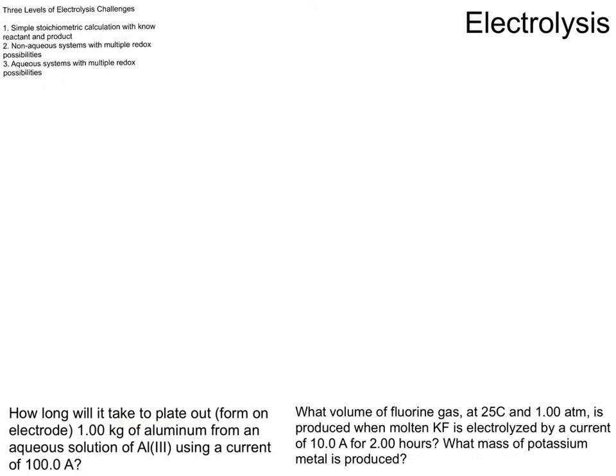So we want to know how long it's going to take to plate out or produce on the electrode. When we say plate out, what we mean is that some elemental metal material is being formed on the surface of the cathode electrode. That's what plating out means, it sticks to the surface of the electrode. So how long is it going to take to produce on the electrode, plate out, a kilogram of aluminum?